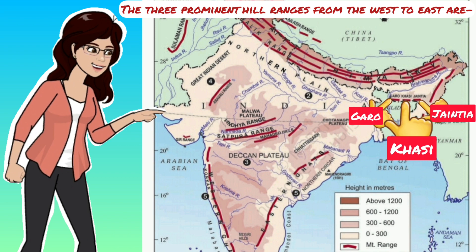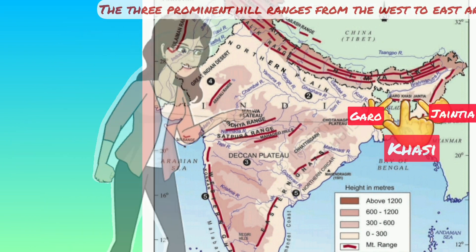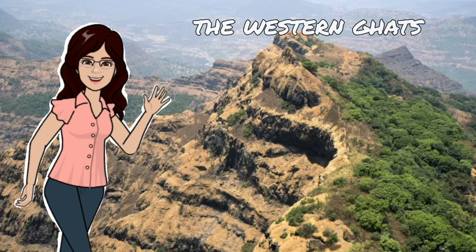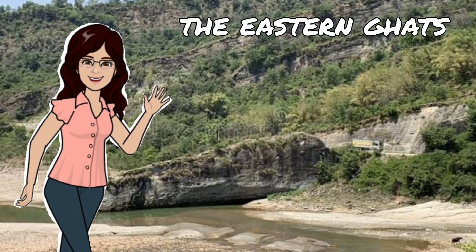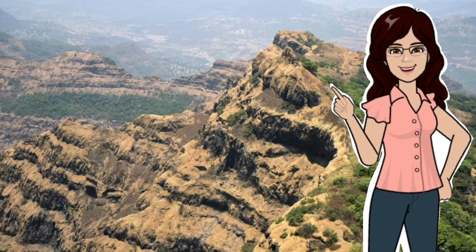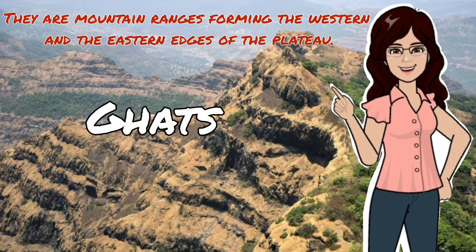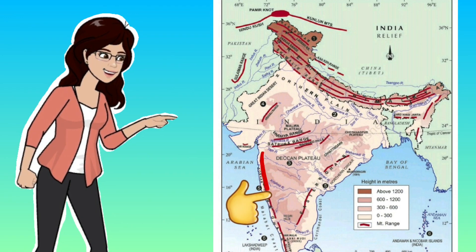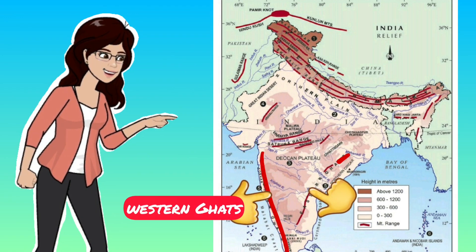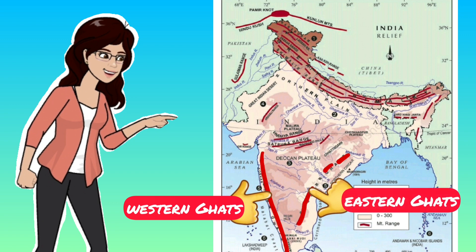Now let us know about the Western Ghats and the Eastern Ghats in detail. The Western Ghats and the Eastern Ghats are basically mountain ranges forming the Western and Eastern edges of the plateau. The Western edge of the plateau is known as the Western Ghats, whereas the Eastern edge is known as the Eastern Ghats.